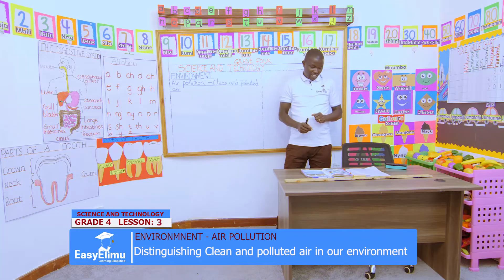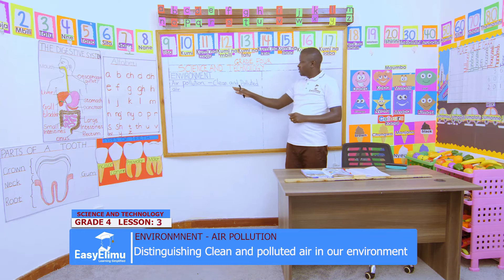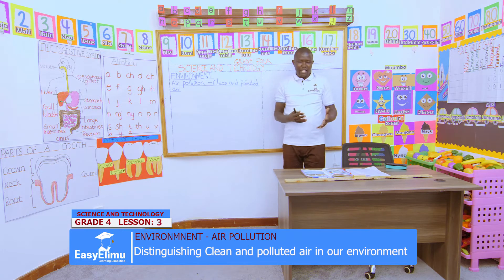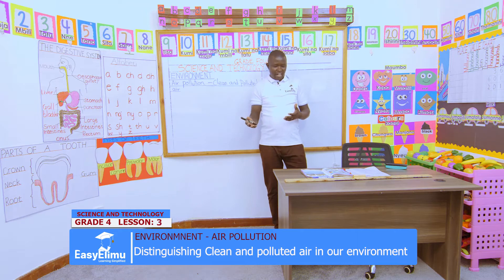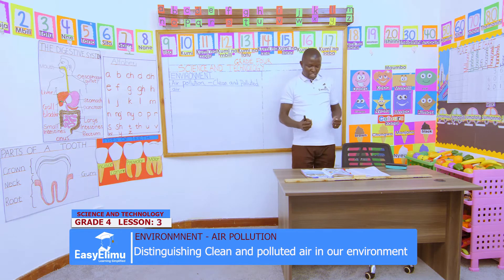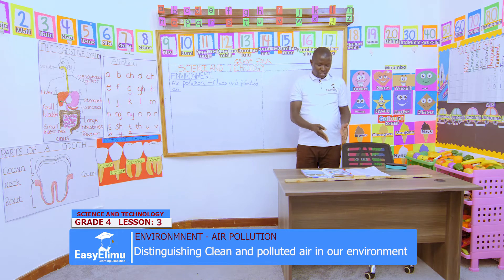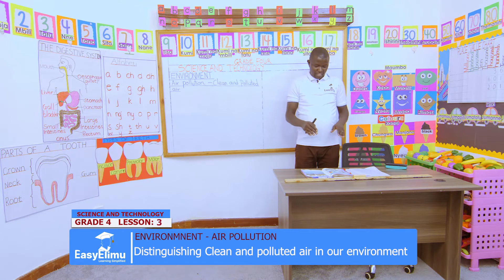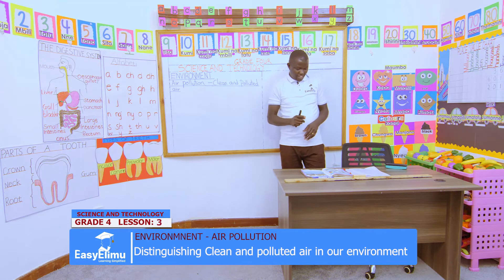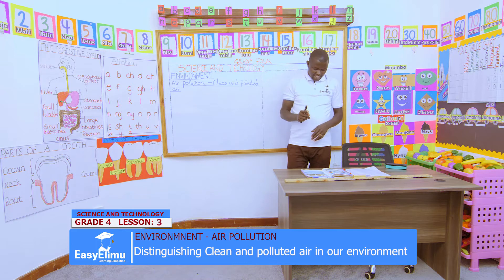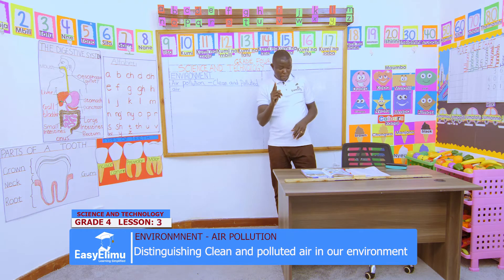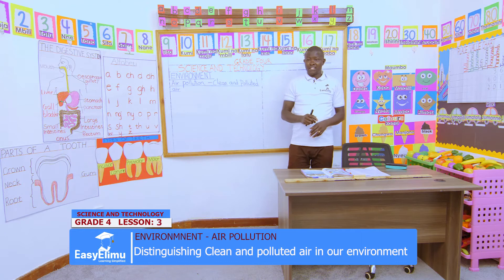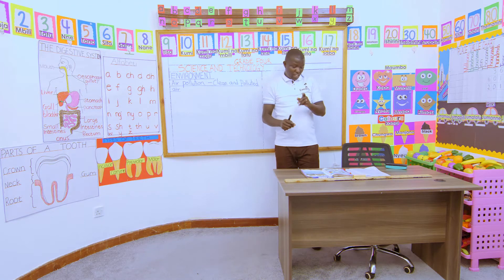And in today's lesson we will distinguish clean and polluted air. How do you distinguish clean and polluted air? In pairs, let us look at the pictures below. How is air made dirty in those pictures? How is air polluted in those pictures?